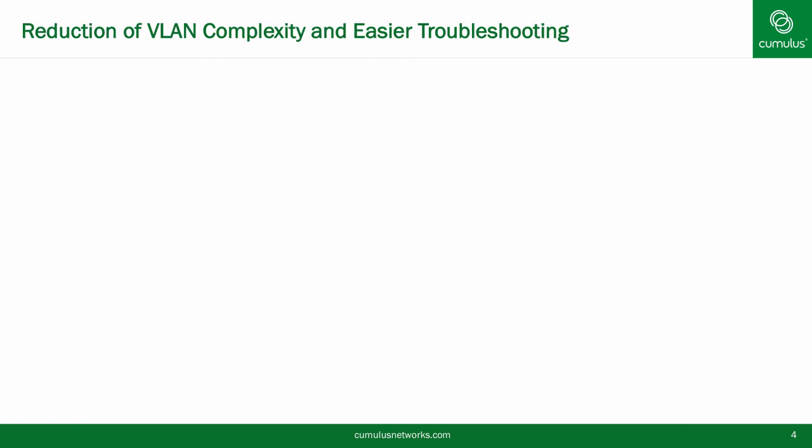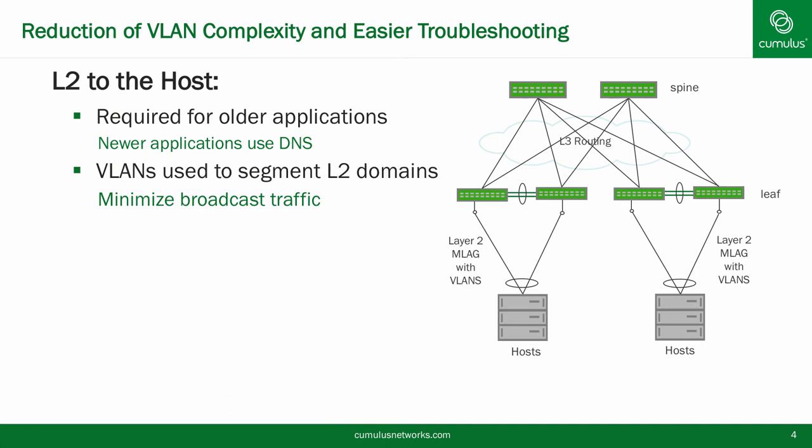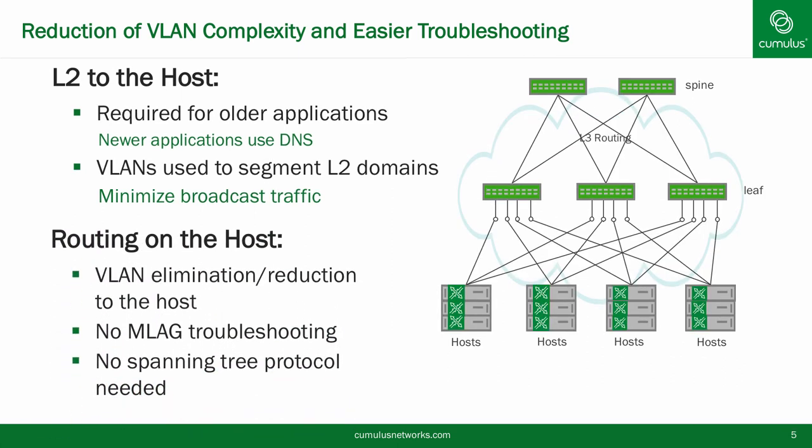One of the benefits of routing on the host is the reduction of VLANs. In the past, we needed Layer 2 for discovery, for heartbeat, and to move IP addresses or VMs around. Using Layer 2 resulted in limited scale. VLANs were used to segment that Layer 2 traffic to help mitigate broadcast storms. However, today modern applications use DNS for application discovery, and modern cluster applications don't rely on multicast for heartbeat. The new applications greatly benefit from servers, VMs, and containers proactively injecting their /32 addresses into the cluster or Layer 3 network, allowing a much simpler network.